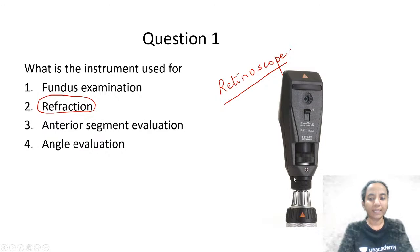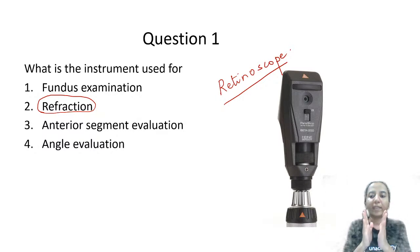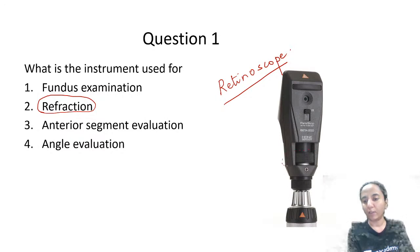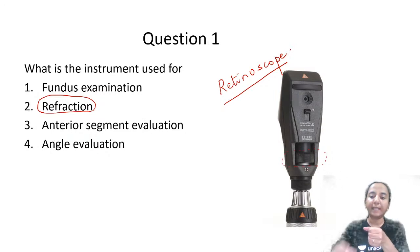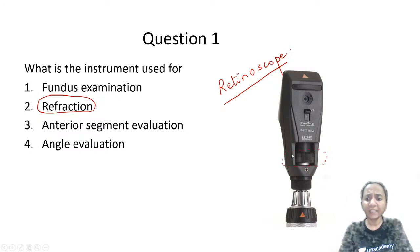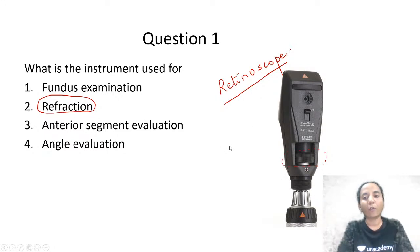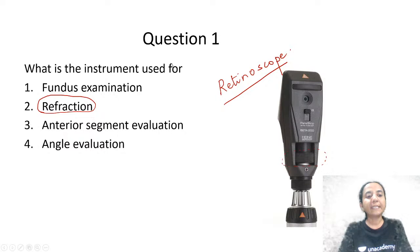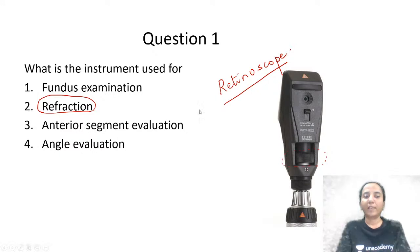How do we identify a retinoscope? This instrument has a handle, and on top of the handle there is a head. The head is slightly elongated in shape and there is a dial on the shaft. Though the name is 'retinoscope,' it is not used for evaluation of the fundus — it is used for refraction, for assessment of refractive error.